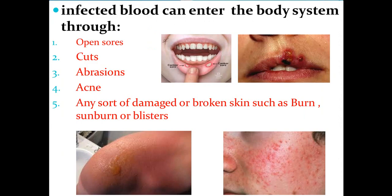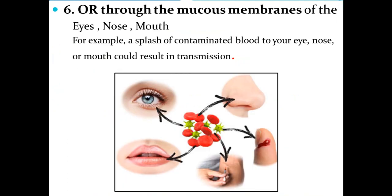Infected blood can enter the body through open sores inside or outside the mouth, cutting wounds, abrasions, lacerations, acne, burns, sunburn, and blisters — any sort of damaged or broken skin. Or through the mucous membranes — a splash of contaminated blood to the eye, nose, or mouth could result in transmission of blood-borne pathogens.